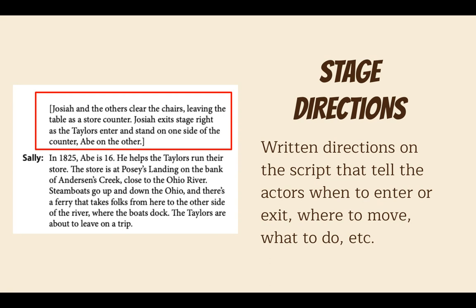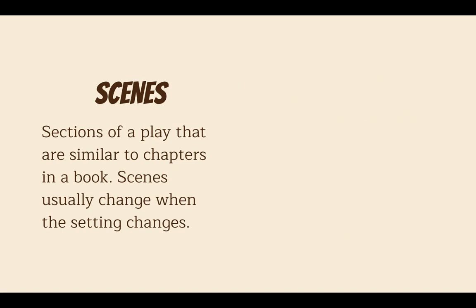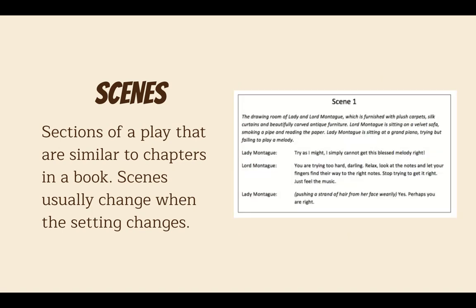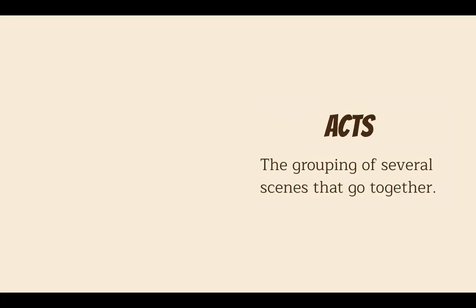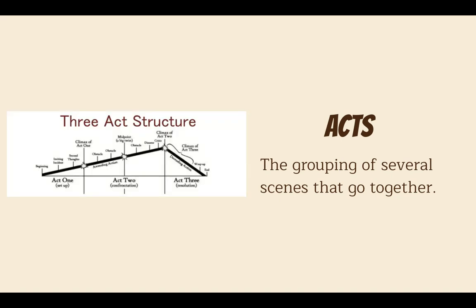Then we have scenes, which are sections of a play similar to chapters in a book. Scenes usually change when the setting changes. On a script it says 'Scene One' at the top, and you'll notice it has the stage directions, the dialogue, and the character tags. The scenes separate the story into parts. Then you have acts, which are the grouping of several scenes that go together. Not all plays will have acts — it really depends on the length of the play and how the story is structured.